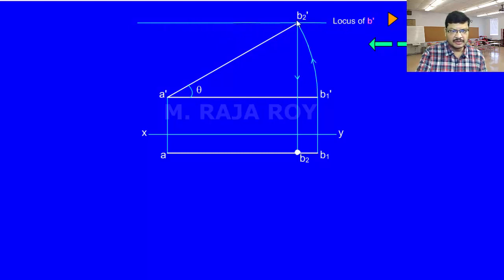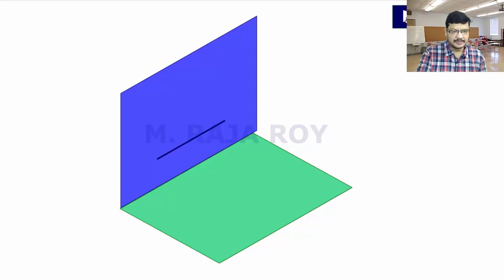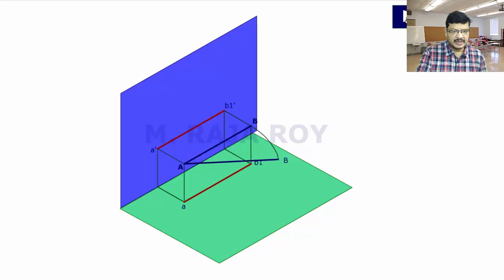Now I am drawing the second case on the same figure. In the second case, we have to tilt the top view A'B1'. This gives B3'. From B3', if you draw a projector, you get B3'. A'B3' is the true length and A'B3' is the reduced length in the front view. This is the locus of top views — the final top view lies on this line only. Above HP, in front of VP — tilting with respect to VP to angle phi — the top view represents the true length and the front view represents the reduced length. Both cases are now combined in this same figure.